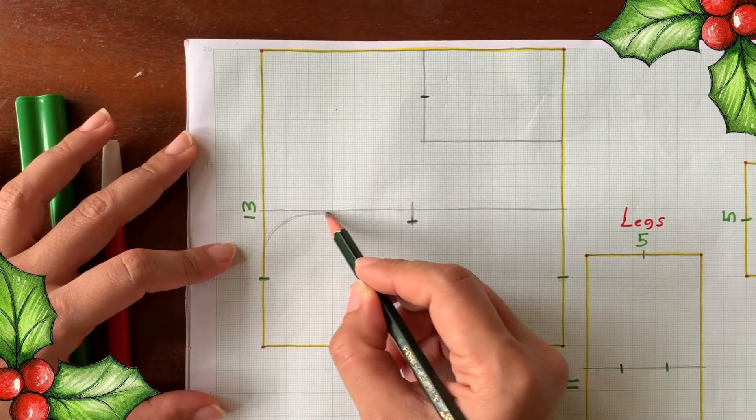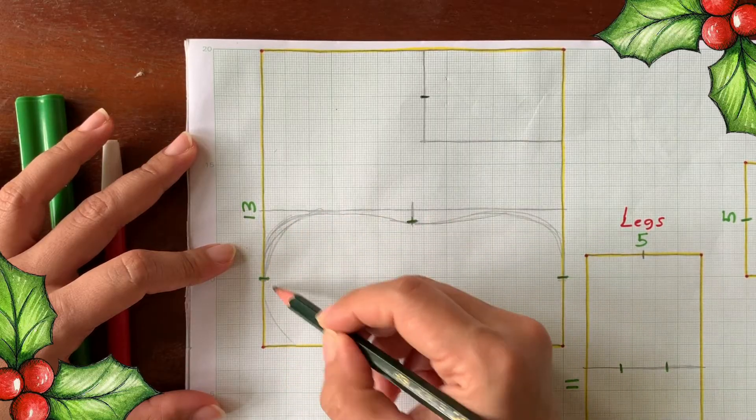Let's start with the reindeer's body. Draw a simple soap shape like this.